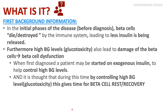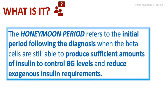To sum up, the honeymoon period refers to the initial period following diagnosis when the beta cells are still able to produce sufficient amounts of insulin to control blood glucose levels and also reduce the amount of exogenous insulin requirements.